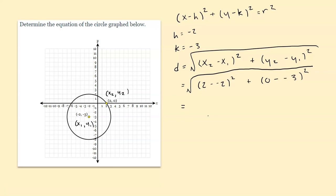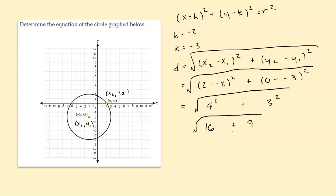2 minus negative 2 is 4 squared, plus 0 minus negative 3 is 3 squared. 4 squared is 16, 3 squared is 9, and 16 plus 9 is 25. Square root of 25 is 5. Now we know the distance between these two points, which is also our radius — r equals 5. Now we can plug these back into the equation. Make sure you have this down in your notes before I erase the distance formula work.